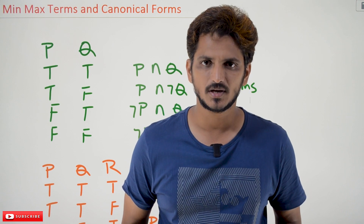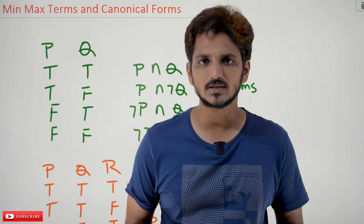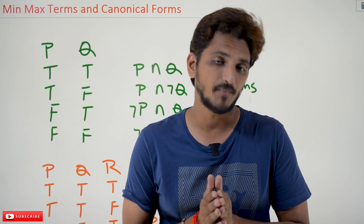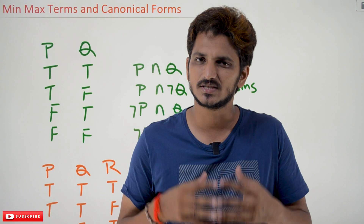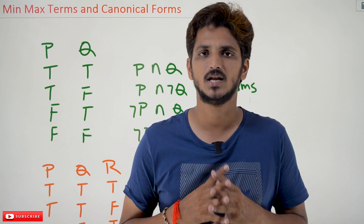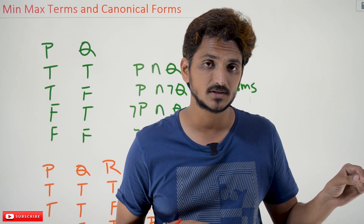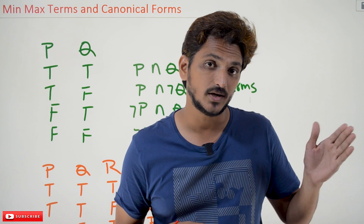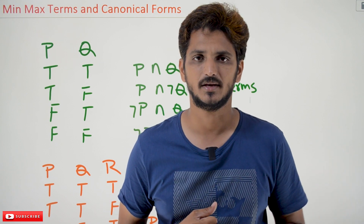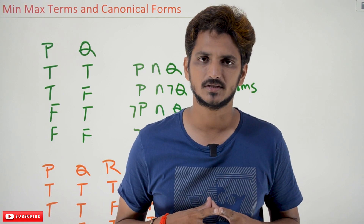Hi, welcome to Learning Monkey. I am Raghu here. In this class we will discuss about Min Terms, Max Terms, and Canonical Forms. These are simple definitions and this is a very easy class to understand. In our last class we clearly discussed about conjunctive and disjunctive normal forms. Please watch those classes and come back here. The link for the playlist is provided in the description below.